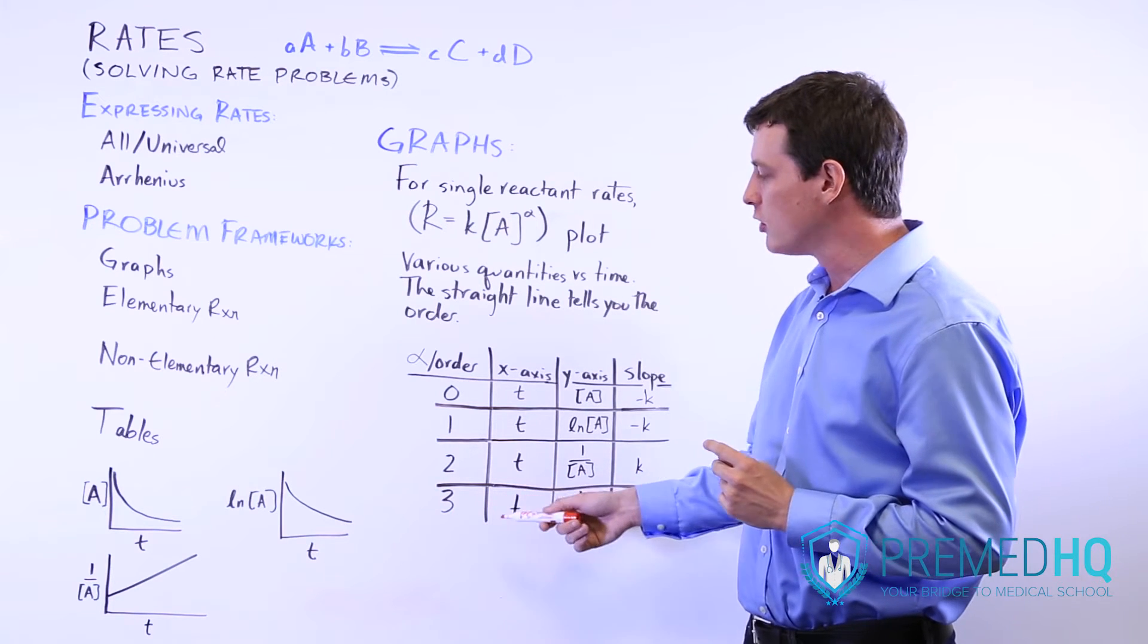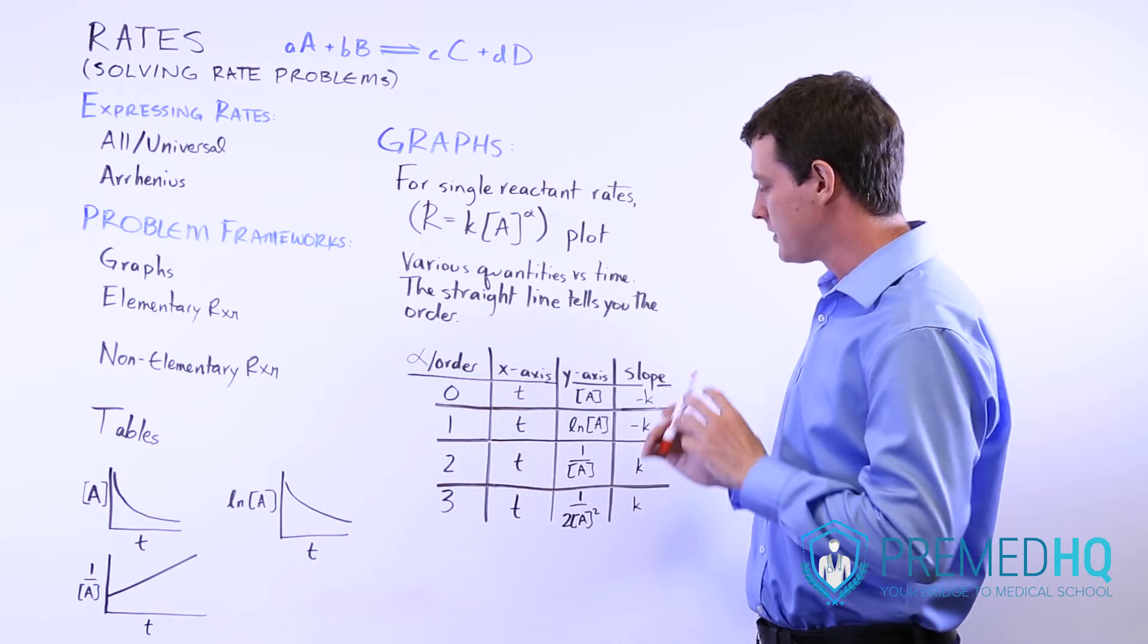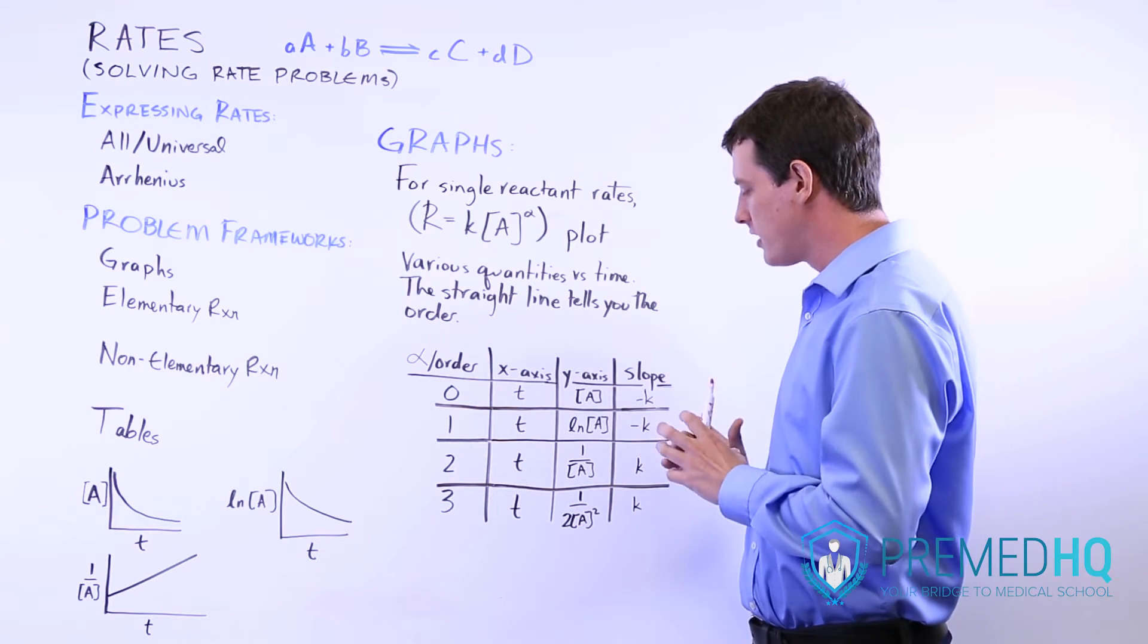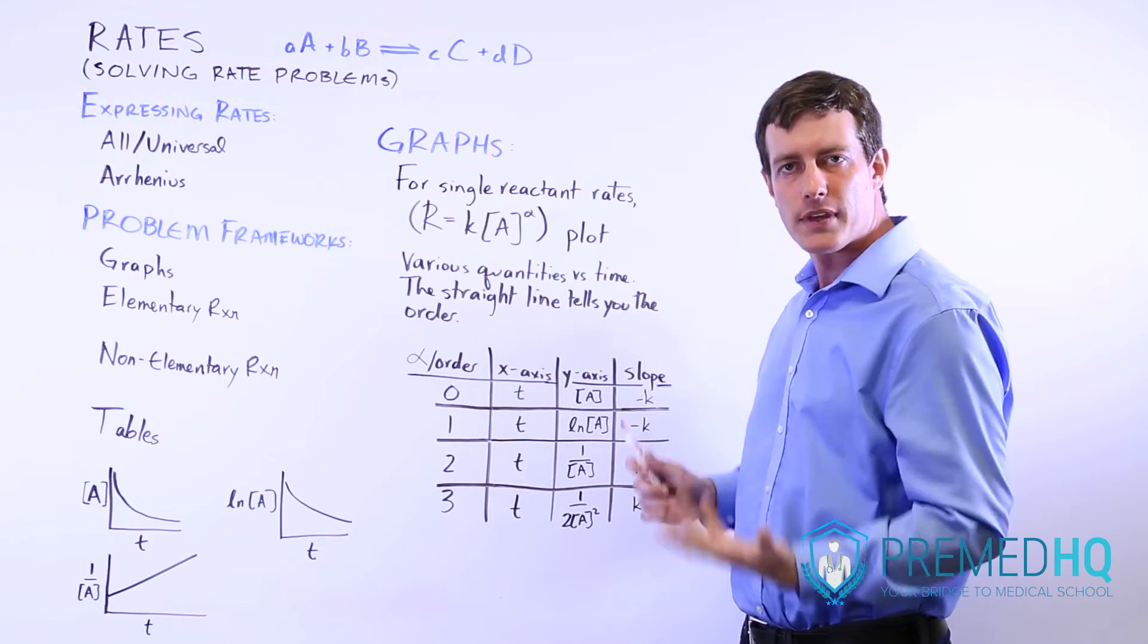And finally, if it's a third order reaction, you're plotting 1 over 2 times the molarity of A squared. And that will yield a straight line with an upward slope of k.